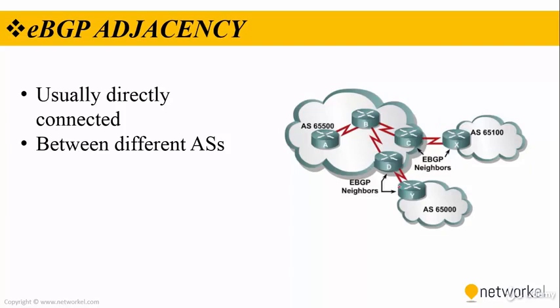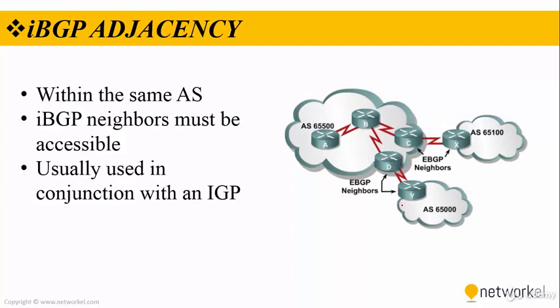As you can see, we have three autonomous systems here. Router C and X can perform an EBGP neighborship, and router D and Y can perform an EBGP adjacency as well. A TCP session is established between the routers before the route exchange. IBGP neighbors allow route exchange within the same autonomous system.